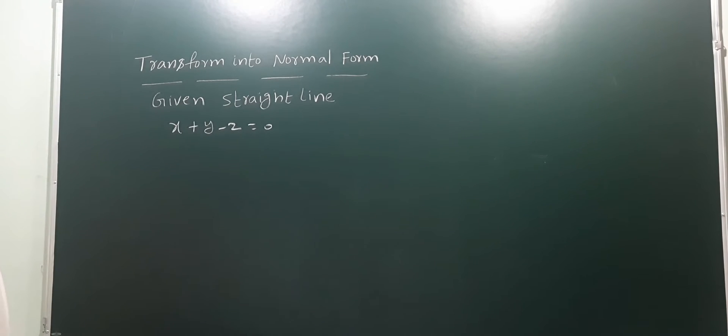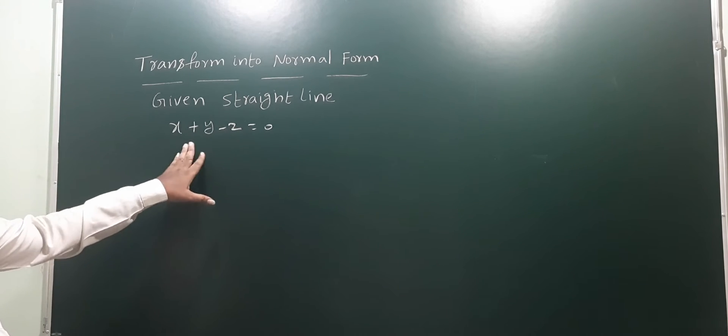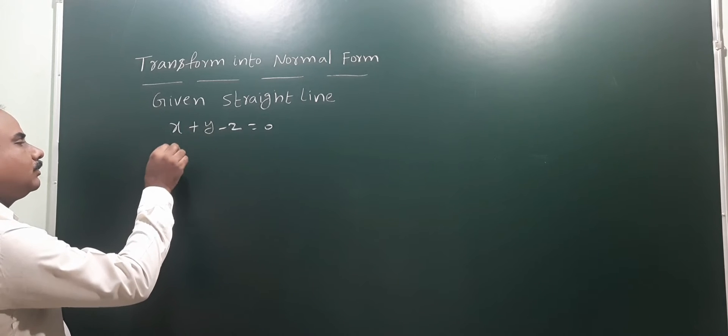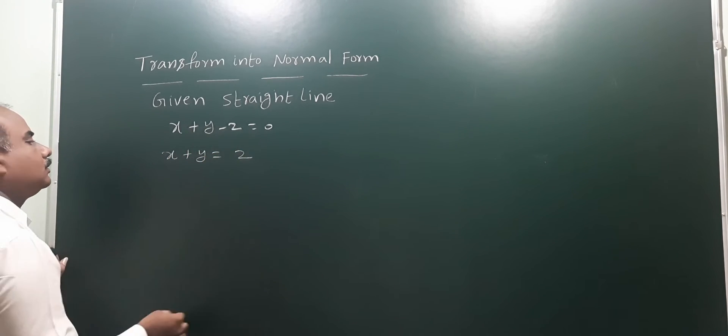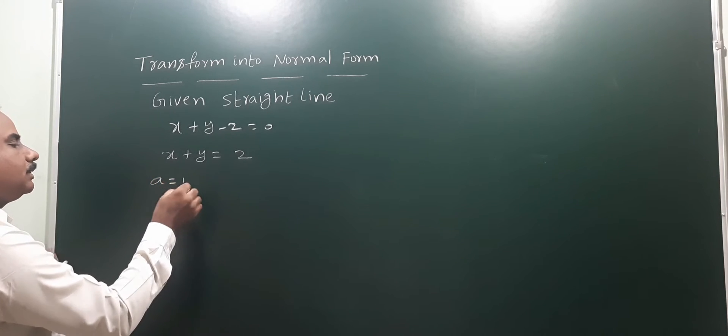The next problem: transform the given straight line into normal form. The given equation is x plus y minus 2 equals 0. The constant must be positive, so we rearrange to x plus y equals plus 2. Next, identify the coefficients.